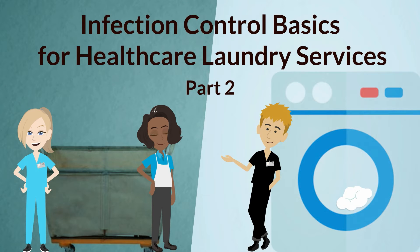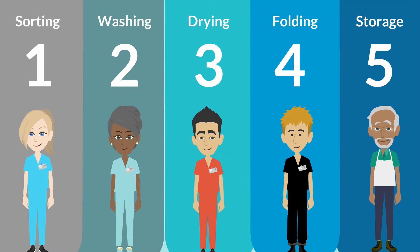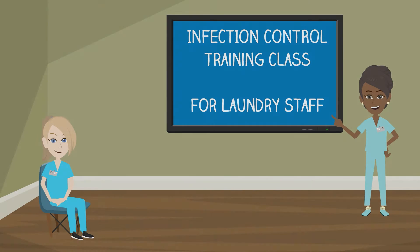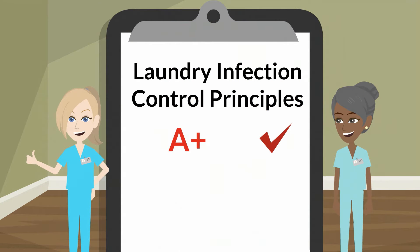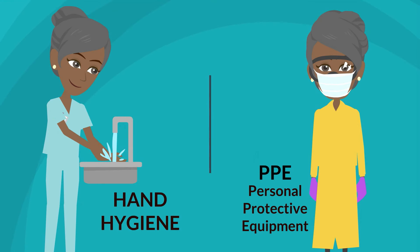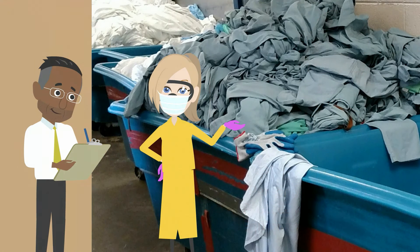Welcome to Part 2 of Infection Control Basics for Healthcare Laundry Services. Here, we will go over the 5 essential steps to properly launder your healthcare items. Laundry personnel working in the sorting and washing area should be appropriately trained in healthcare infection control basics and be able to demonstrate competencies on infection control principles safely to their supervisors. Standard precautions should be followed, including proper hand hygiene and use of PPE. Laundry staff should be frequently supervised to ensure compliance with standard precaution requirements.